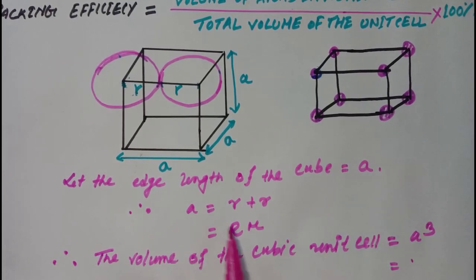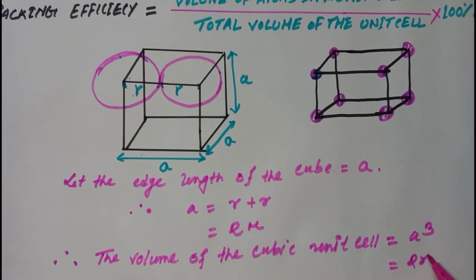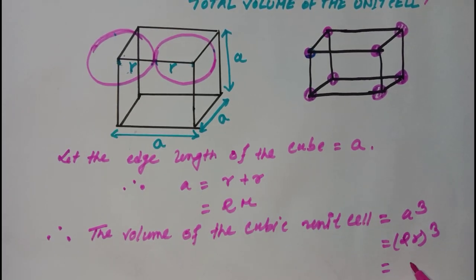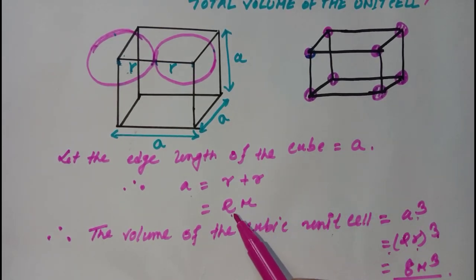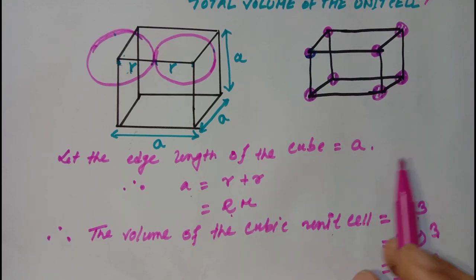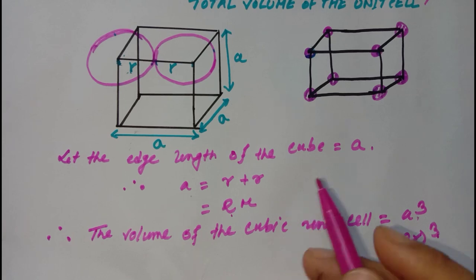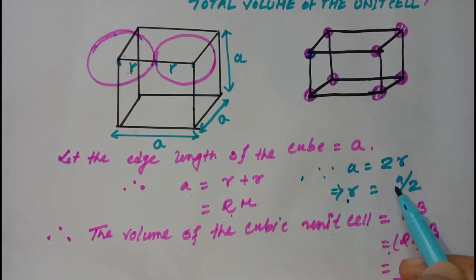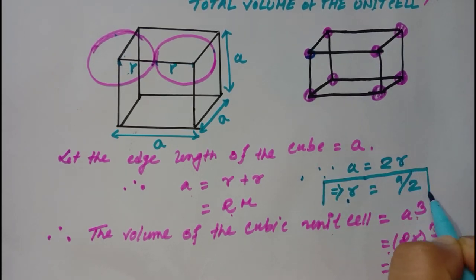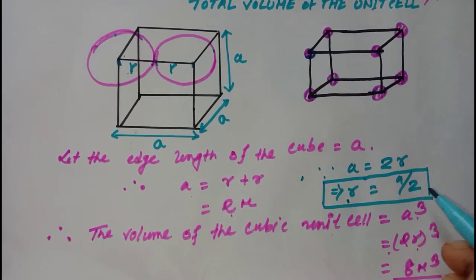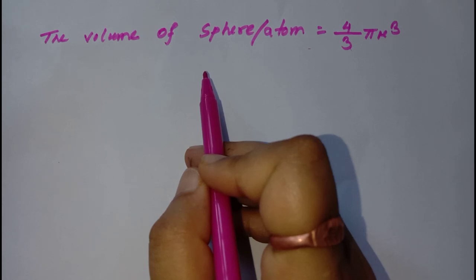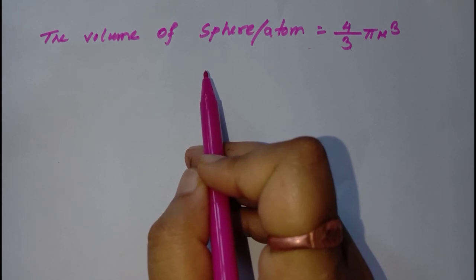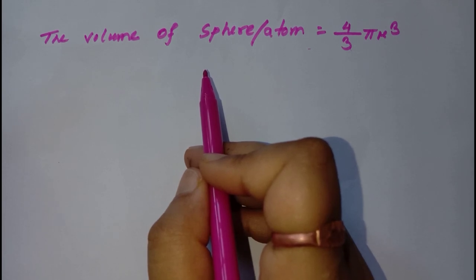Since A equals 2r, the volume of the cubic unit cell is A³ = (2r)³ = 8r³. That is the total volume of the cubic unit cell, equal to 8r³. The atomic radius of a simple cubic unit cell is r = a/2. The volume of a sphere or atom is equal to (4/3)πr³.